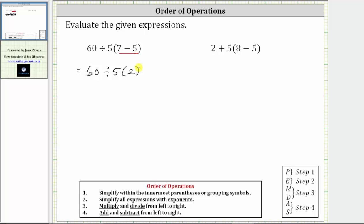Step two in the order of operations is to simplify the exponents. We don't have any exponents, and therefore we move to step three. Step three, we multiply and divide from left to right. So we do not multiply and then divide. Multiplication and division have the same priority. We multiply and divide from left to right.